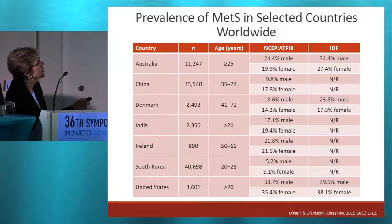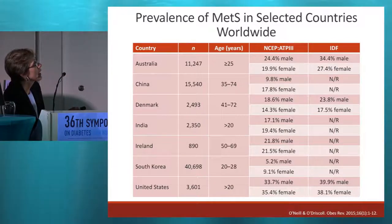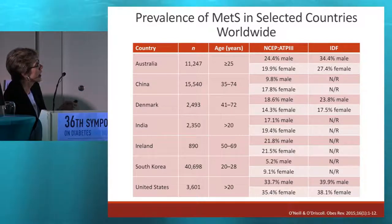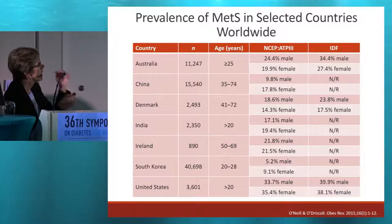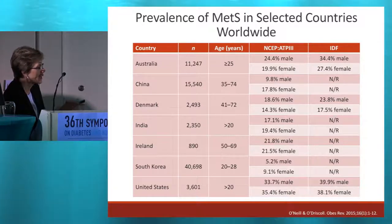You can see the prevalence according to NCEP ATP3 criteria versus IDF criteria. We're all aware that metabolic syndrome is prevalent across the world. What you see here is that, in these countries, the prevalence is anywhere from 5.2% in South Korea all the way up to almost 49% in men in the United States.